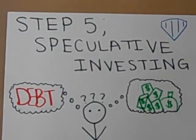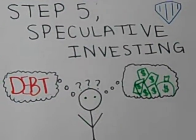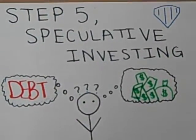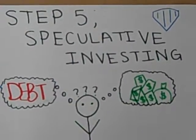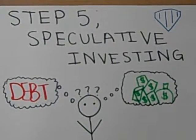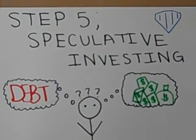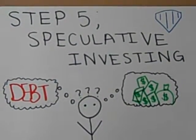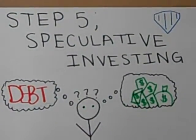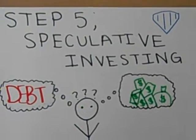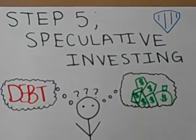Step five: speculative investing. Most people don't get to this stage. This is a high risk investment, usually penny stocks or collectibles.